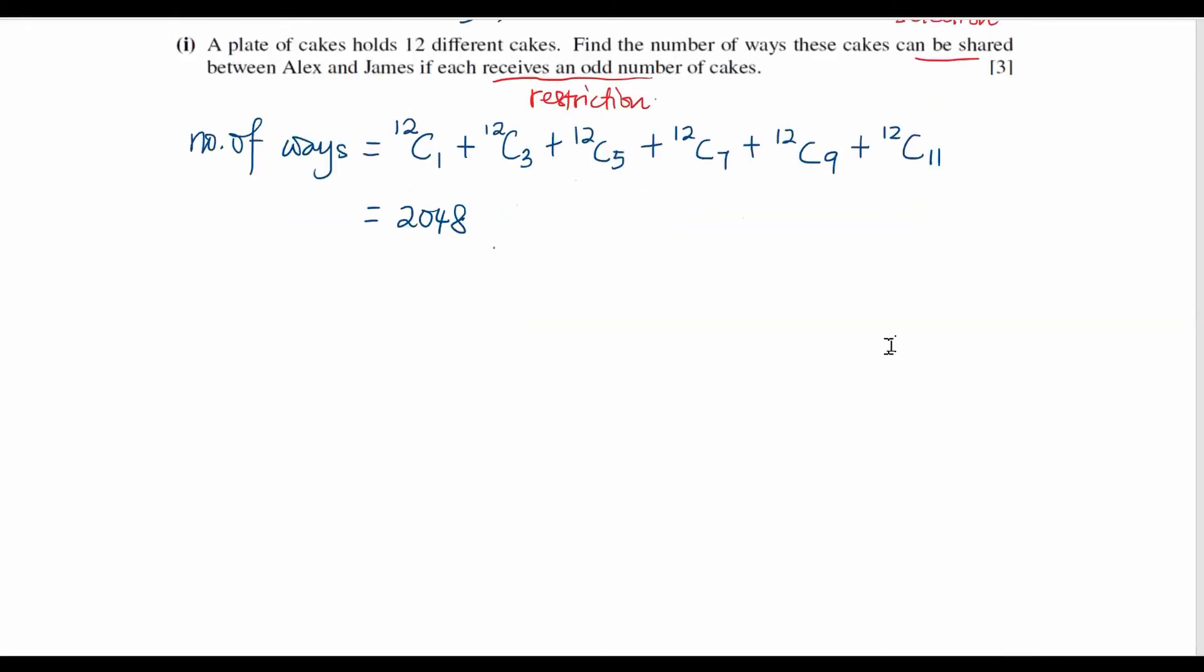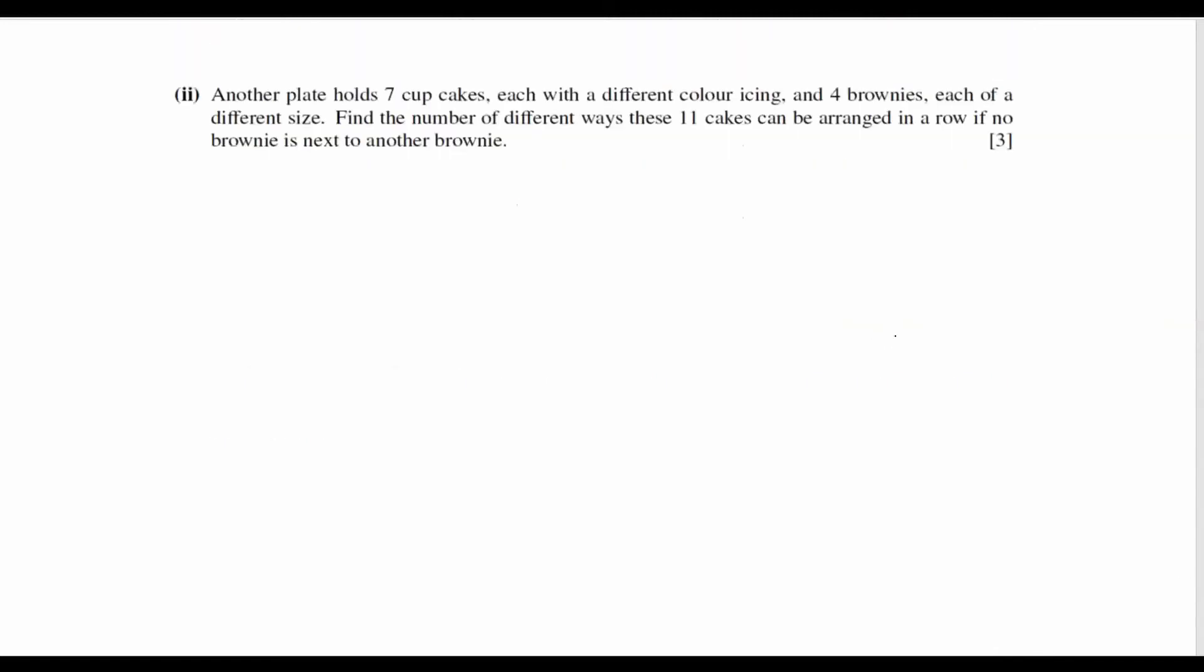Now we look at the second question, Part 2. So another plate holds 7 cupcakes, each with a different colour icing and 4 brownies, each of a different size. Find the number of different ways these 11 cakes can be arranged in a row if no brownie is next to another brownie. So from the info given here can be arranged is telling us we are looking at arrangement. And no brownies is next to another brownie means all are separated.